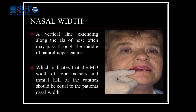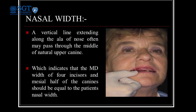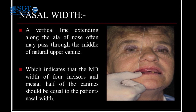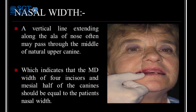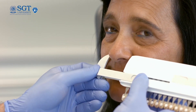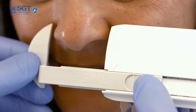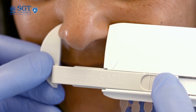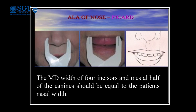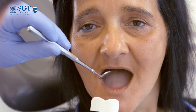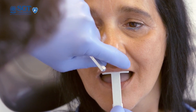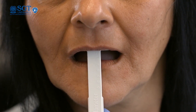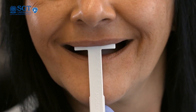Now coming to nasal width: a line passing through the midpoint between the eyebrows and the lateral end of the ala of the nose extended onto the occlusal rims gives the combined width of the anterior teeth. Alternatively, the width of the nose is measured with a caliper and the measurement is transferred to the occlusal rim. The mesiodistal width of the nose is equal to the combined width of the four incisors and the mesial half of the canine. The length of the lip at rest and when smiling can be measured with a papillometer or marked on the occlusal rim, and the anterior teeth can be selected accordingly.